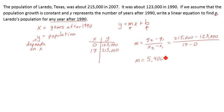You could use 5,410 or 5,411, but whatever is fine. So now we've got y equals our slope times x plus b.